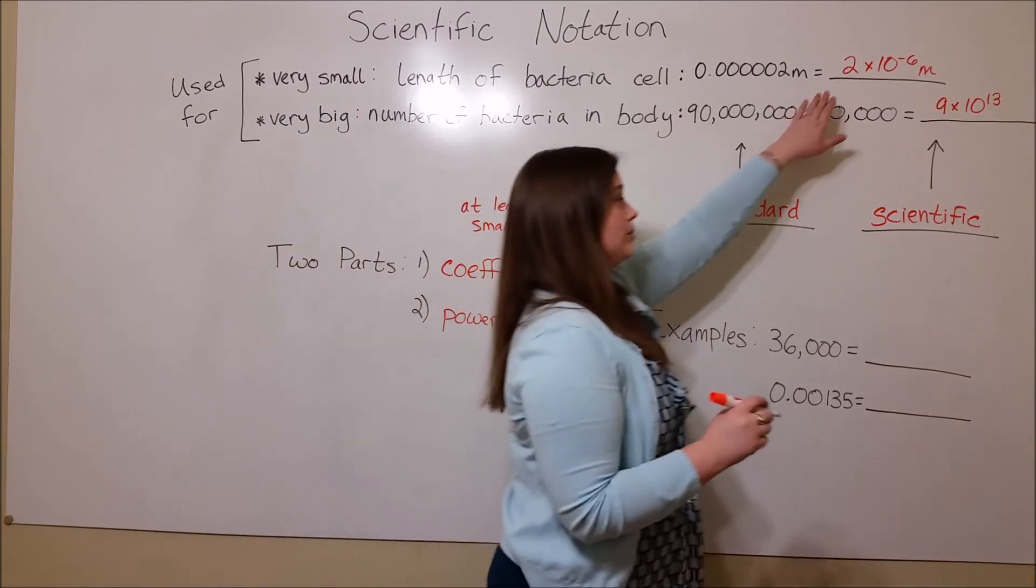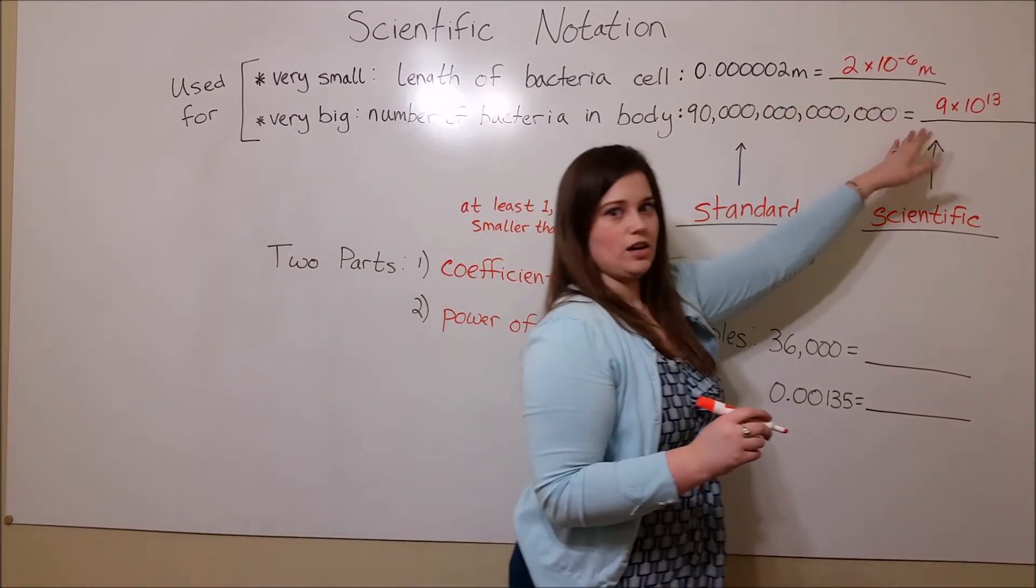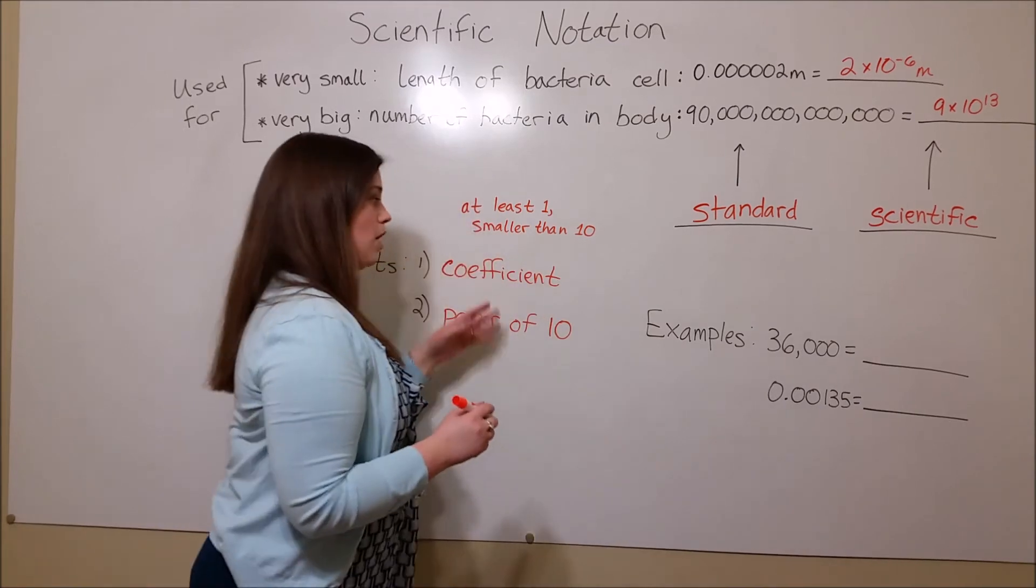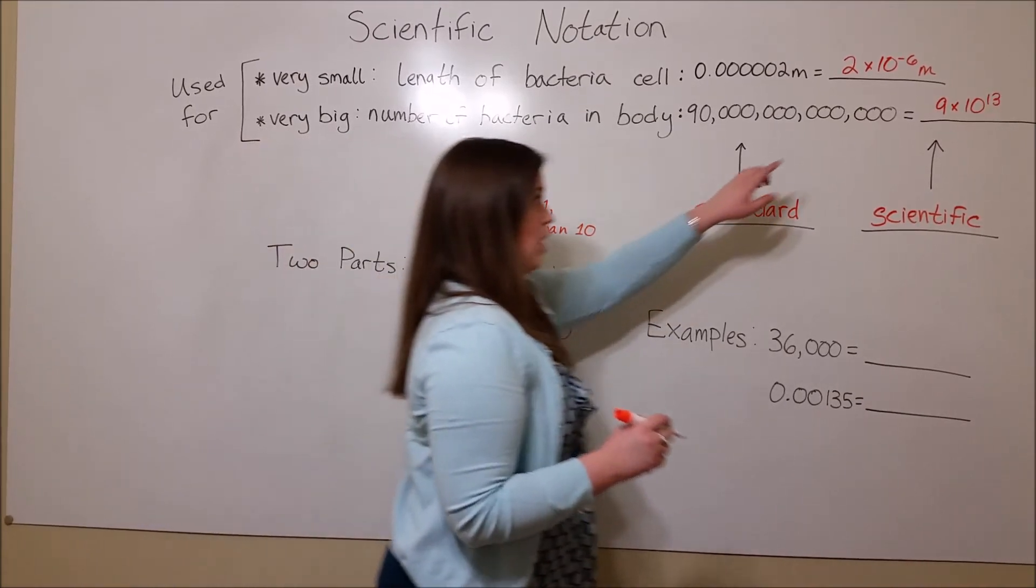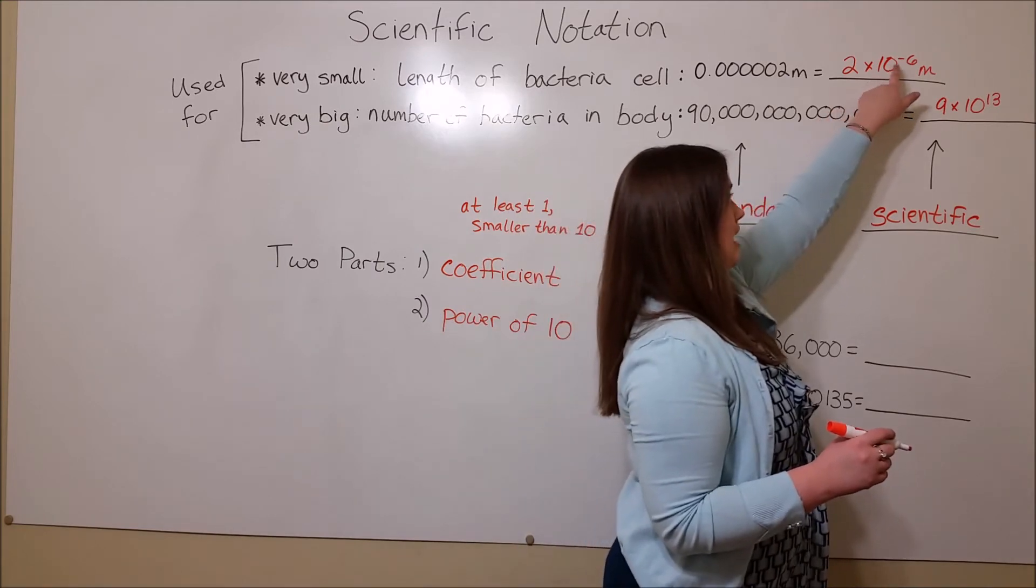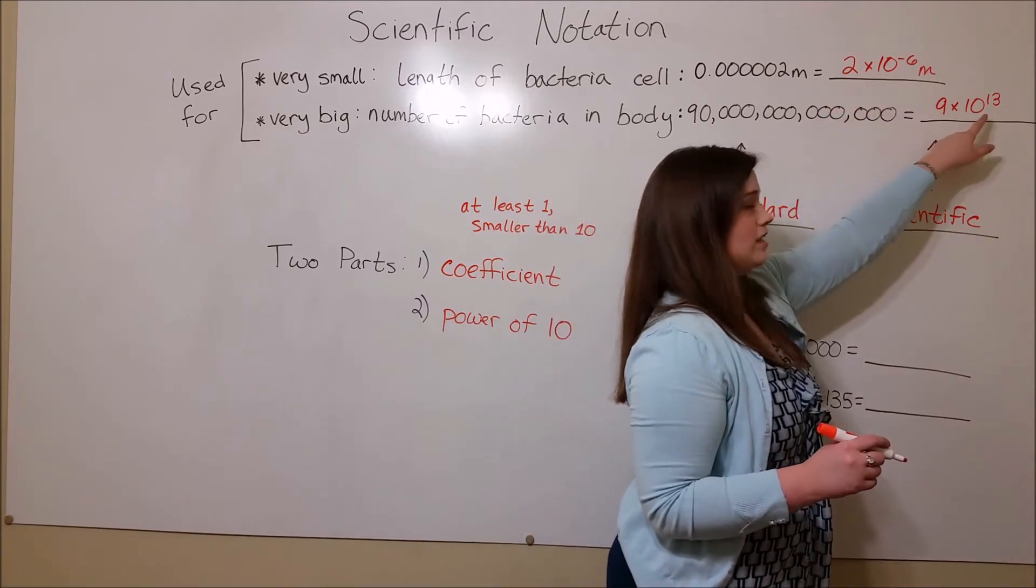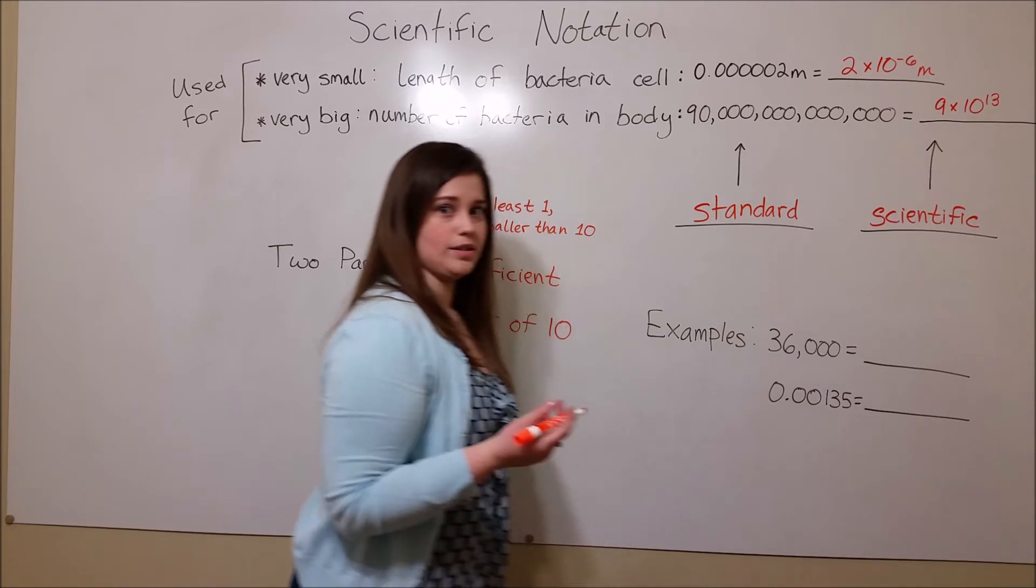And you can see that here. The 2 and the 9 are both at least one, but smaller than 10. The power of 10 is the part that comes next. So 10 to the minus 6, or 10 to the 13th, those are powers of 10.